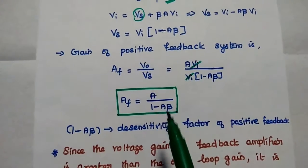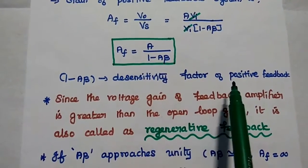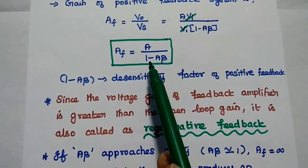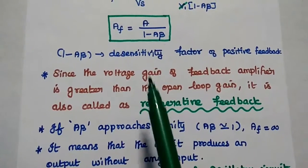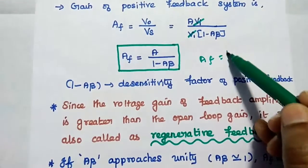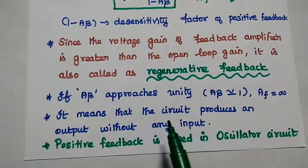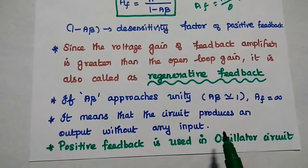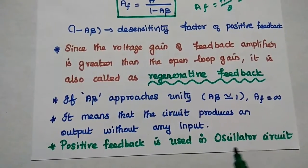For positive feedback, the gain is A divided by (1 − A·beta), where (1 − A·beta) is the desensitivity factor. The closed-loop gain is greater than the open-loop gain A, hence it is called a regenerative feedback system. If A·beta approaches unity, then (1 − A·beta) approaches zero, making AF infinite — the circuit produces output without any input due to this high gain. Hence, positive feedback is widely used in oscillator circuits.